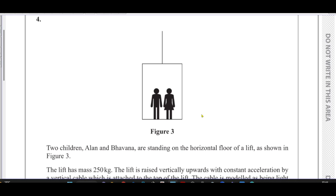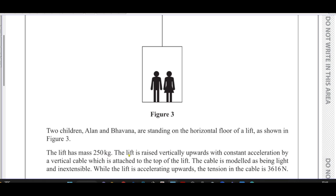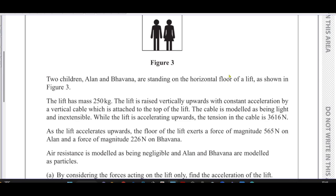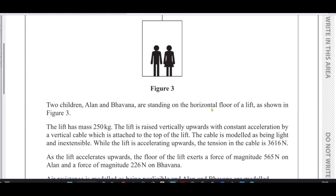Alan and Bavana are standing on the horizontal floor of a lift as shown in figure three. The lift has a mass of 250 kilograms. The lift is raised vertically upwards with constant acceleration by a vertical cable attached to the top of the lift. The cable is modeled as light and inextensible. While the lift is accelerating upwards, the tension in the cable is 3616 newtons. The floor of the lift exerts a force of 565 newtons on Alan and 226 newtons on Bavana.